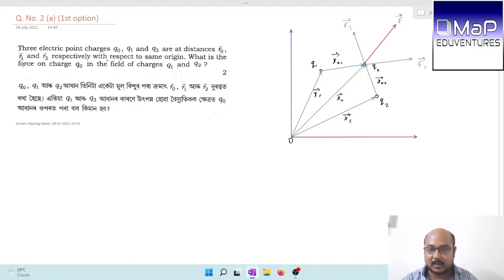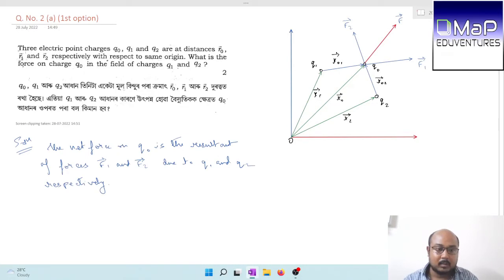Since force is a vector quantity, the resultant force involves vector addition. We simply apply the parallelogram law of vector addition. The net force on Q0 is the resultant of forces F1 and F2 due to Q1 and Q2 respectively.